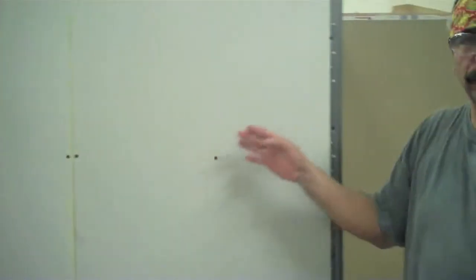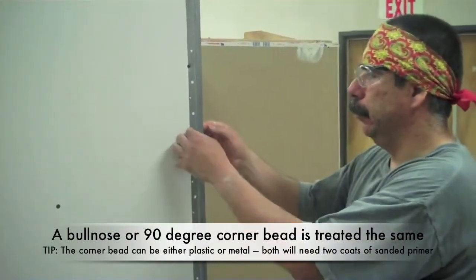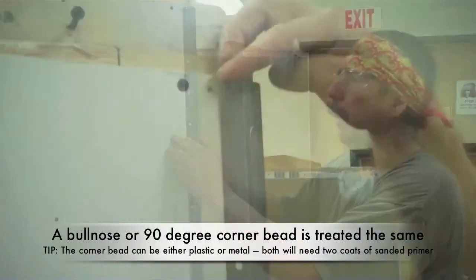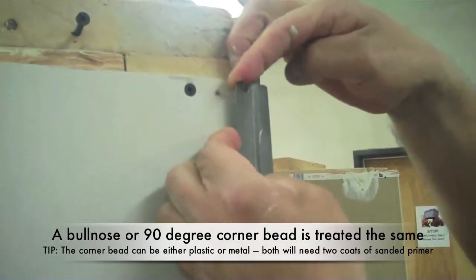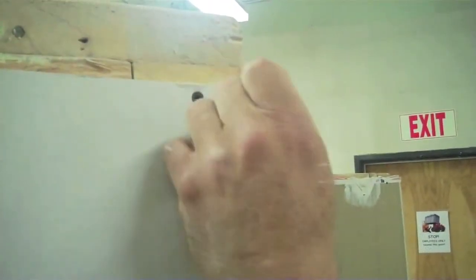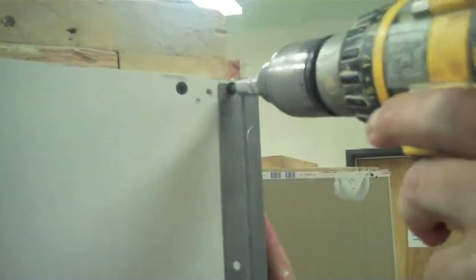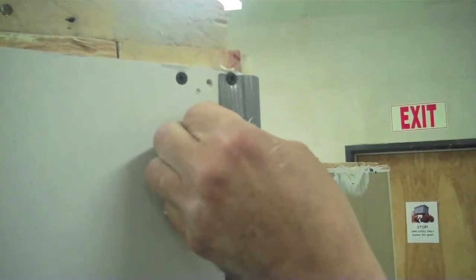It's very important for you to check your bull nose if there's any movement of the corner bead. As you can see right here it's loose, so we're going to put a screw on there and fix it. And now it's nice and firm.